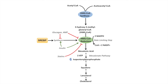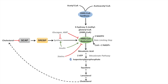Cholesterol also acts as a negative feedback regulator on its own production. It does that by negatively regulating HMG-CoA reductase by inhibiting a protein known as SCAP, which is a steroid binding protein. Normally, if cholesterol is not around, SCAP can cleave and lead to the activation of SREBP. However, when cholesterol is present in excess, it binds to SCAP, preventing SCAP from cleaving and activating SREBP. That's how cholesterol negatively regulates its own production.